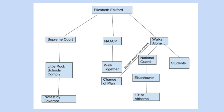I would start out the story by showing that photo and telling Elizabeth's name and her age, and then I would go back and remind my students about the Supreme Court Brown v. Board of Education decision in 1954, which said that schools had to integrate. In 1957, the Little Rock schools decided to comply with this decision, and they were going to integrate Little Rock Central High School, which was previously an all-white school in a working-class area of Little Rock.